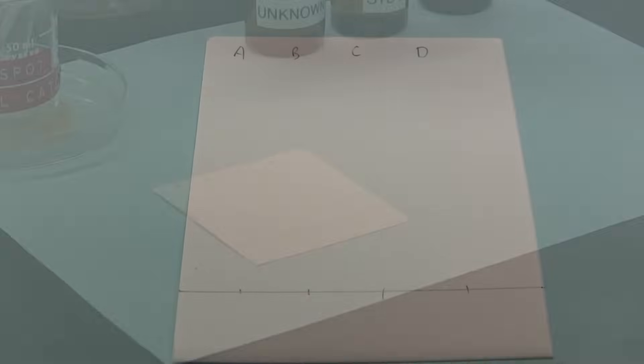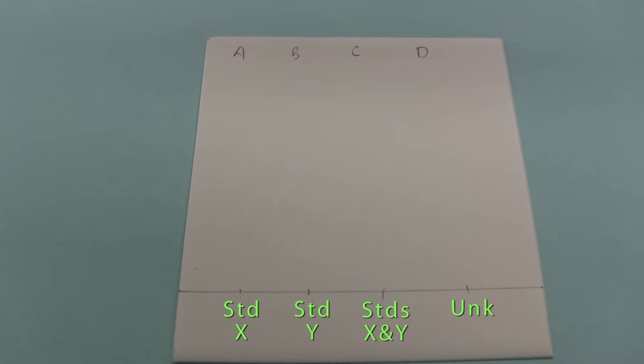So looking at the spotted plate, we have standard X in lane A, standard Y in lane B. In lane C, we have a mixture of standards X and Y. And in lane D, we have our unknown, which is either X or Y, or a mixture of both. Let's find out the composition of the unknown.